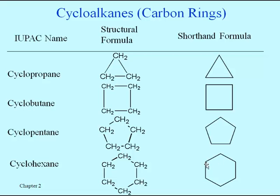We just have to know that in this class we interpret the corners to be carbons, and if we needed to add in hydrogens there would be two hydrogens apiece, because in a ring all carbons are connected to two other carbons and therefore need those two hydrogens. The five- and six-membered rings — cyclopentane and cyclohexane — are by far the most common in nature, and we will see those show up a lot as we go along.